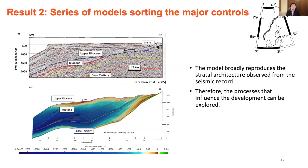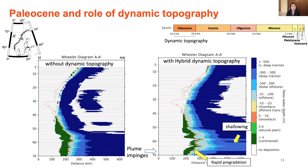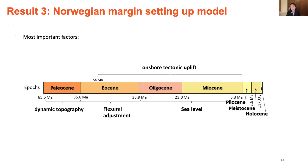With such good correlation, we then explore the role of each process. To show how we extract the effect of dynamic topography as an example: we run models with and without the plume and see how sedimentation is affected. The Wheeler diagram of the model with dynamic topography shows that as the plume impinges, there is rapid progradation and shallowing of the depositional environment — characteristics that correlate well with Earth data and are not observed in the model without dynamic topography. We conclude that dynamic topography plays an important role during the Paleocene and when the plume impinges. Similar tests for all other parameters show that different factors became crucial drivers of sedimentation over different time periods.